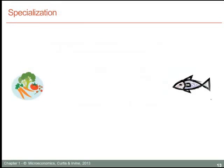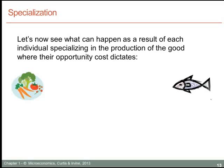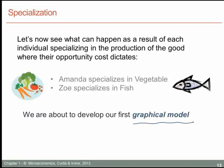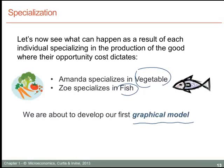Let's look at things now in graphical form. We are going to have each individual specialize in producing one of the goods, rather than having each individual be self-sufficient and divide their time between the two goods. This is going to be our first graphical model. Because of their relative efficiencies, Zoe is going to specialize in fish and Amanda is going to specialize in vegetables. The graphical model will have two dimensions — a vertical axis and a horizontal axis — and we will place the two goods on these axes.